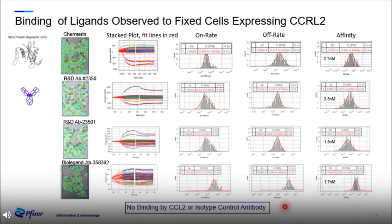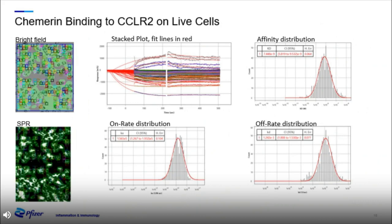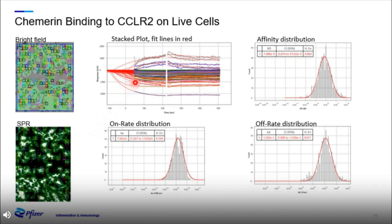Now moving to binding on live cells. In this plot you can see chemorin binding to CCRL2 on live cells. The regions of interest used for the accepted fit are shown in the bright field image — there are many of them. The stacked fit plot is shown, with a good distribution of affinity. The on-rate and off-rate distributions are also shown. In the SPR image, some brighter areas are visible, indicative of very high SPR responses corresponding to the higher sensorgrams in the plot.